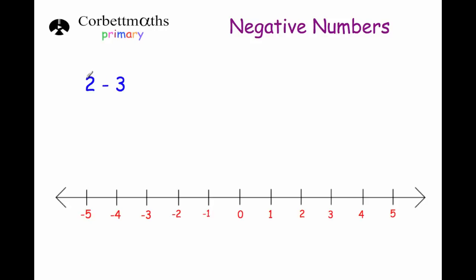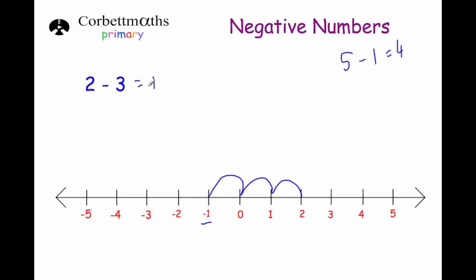Our first question is to work out two subtract three. As with basic subtraction — for instance, if I was to work out five take away one, I would go to five on the number line and go one to the left, and the answer would be four. To work out two subtract three, I'm going to go to two on the number line and go three to the left: one, two, three. So the answer is negative one — two subtract three equals minus one.